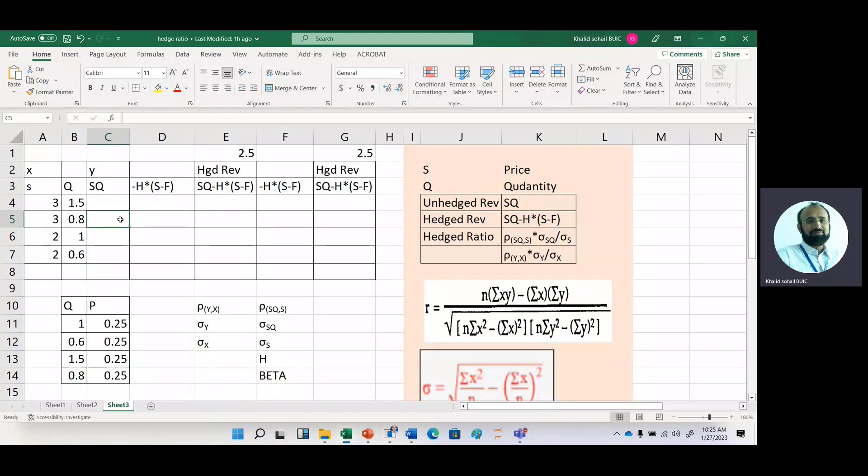In the second part of this video, we will use Excel formula to get optimal hedge ratio. First, we need expected quantity.